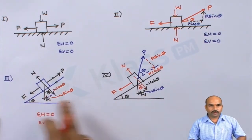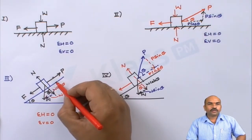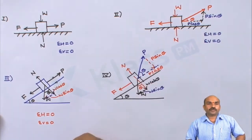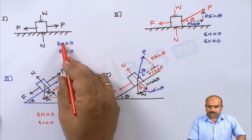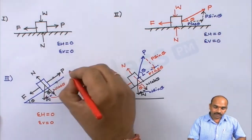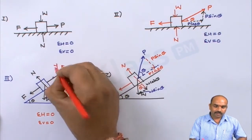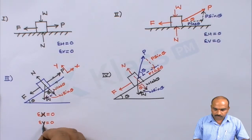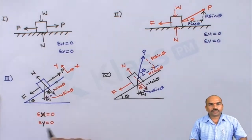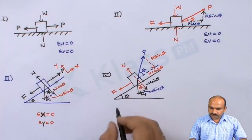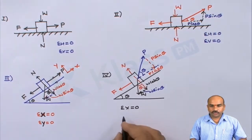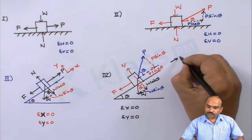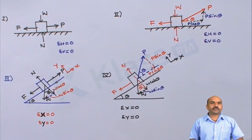The difference between Case 3 and Case 4 is that in Case 3 the force P is applied along the inclined plane, while in Case 4 the force P is inclined to the inclined plane. For Cases 3 and 4, the x-axis is taken along the inclined plane and the y-axis perpendicular to it. So instead of writing horizontal and vertical equations, we write the sum of all forces about x equal to 0 and about y equal to 0, as covered in the previous lecture.